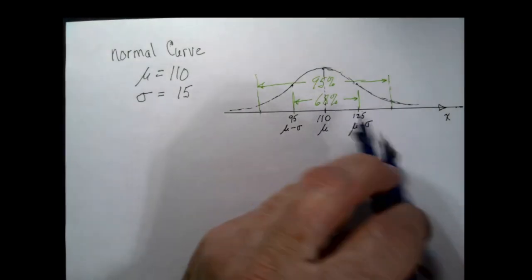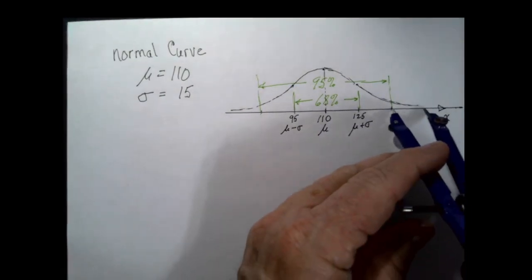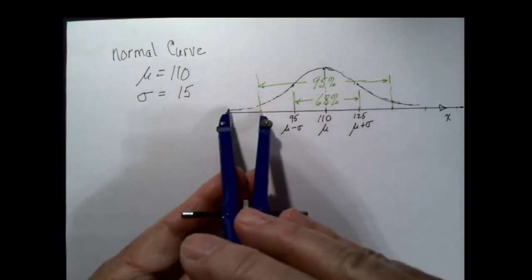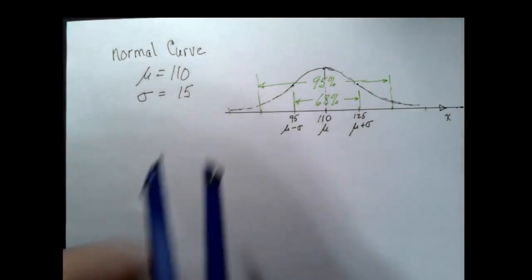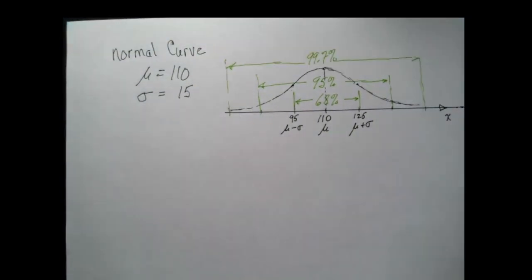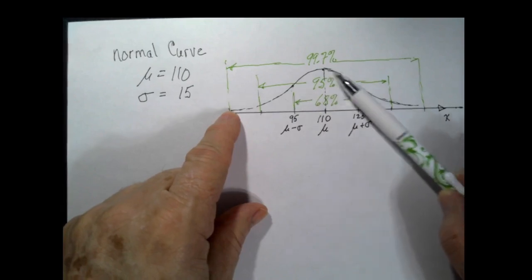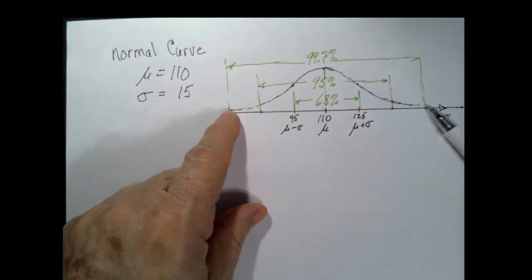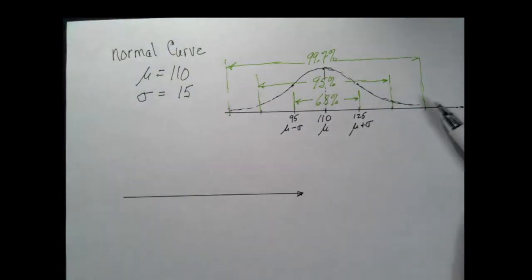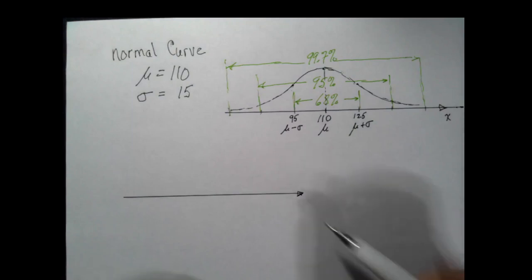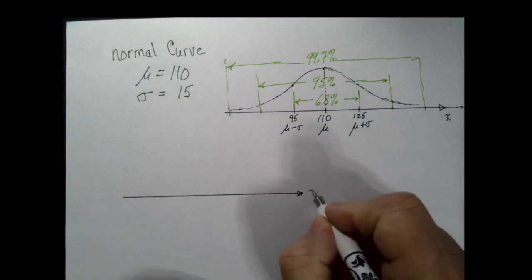And if you go out to three standard deviations, within three standard deviations of the mean, there's 99.7% of the population. Now each of these x values could be converted to a z score.